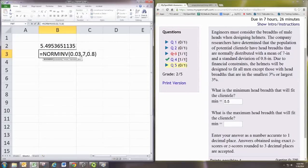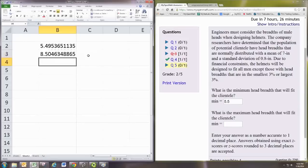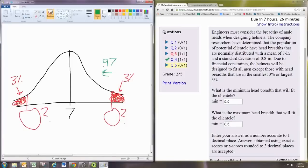And we just change this to 97%. Let's see that. It's 8.5. And notice that that follows the symmetry that we were talking about earlier. This is 8.5, and this is 5.5. And the distance is 1.5 on either side.